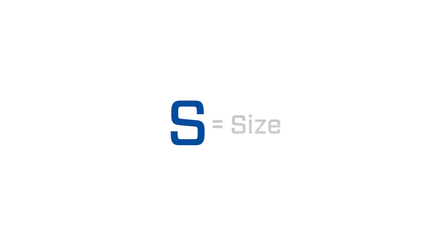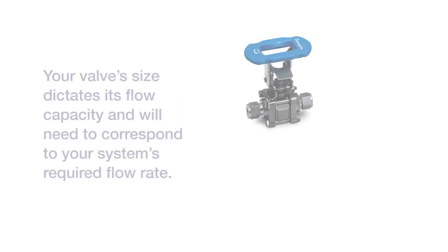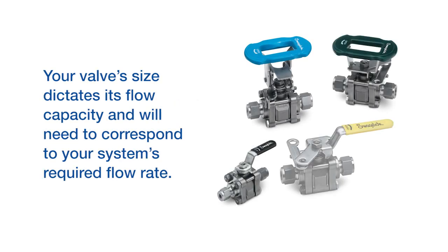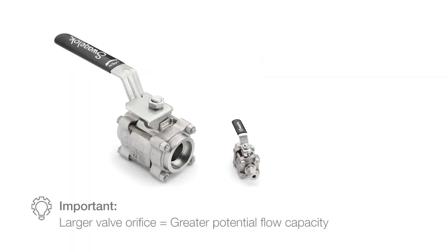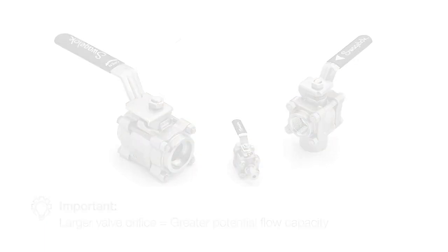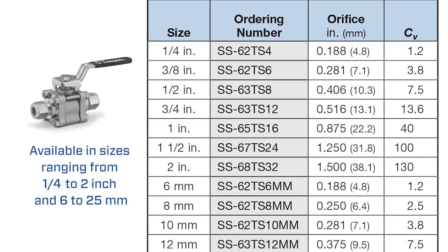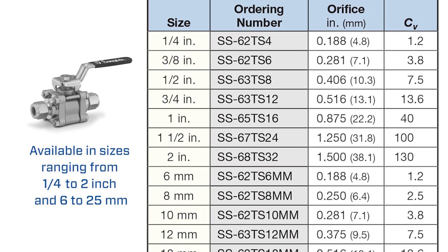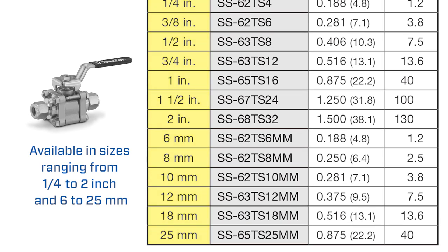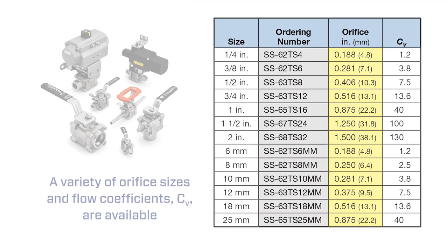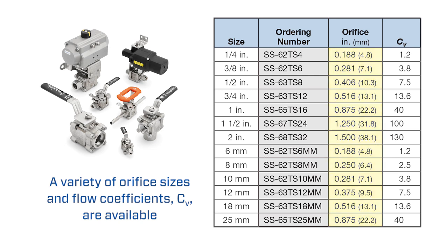First, determine the size you need, which dictates the valve's flow capacity and will correspond to your system's required flow rate. The larger your valve's orifice, the greater the potential flow capacity. 60 series ball valves are available in sizes ranging from 1/4 to 2 inch and 6 to 25 millimeters. These valves are offered in a variety of orifice sizes and flow coefficients based on the specific end connections selected.